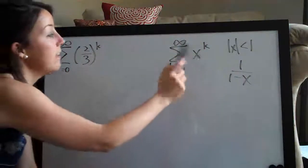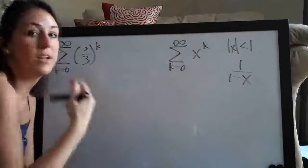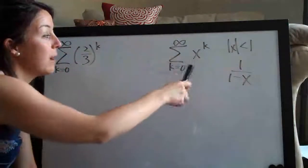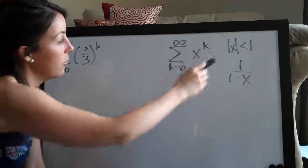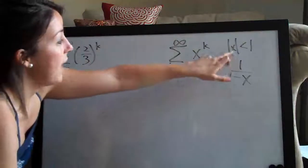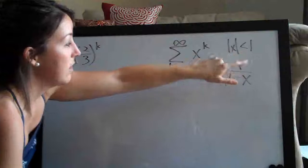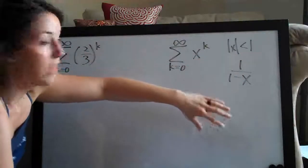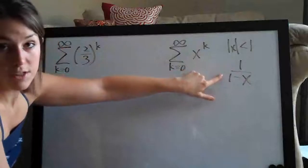So the first is, if your series is in this form, or if you can simplify it to this form—you may not be given it exactly in this form but if you can get it to this point—if it's in this form and the absolute value of x, this x here, is less than one, then in that case, the series does converge and this is the value that it converges to.